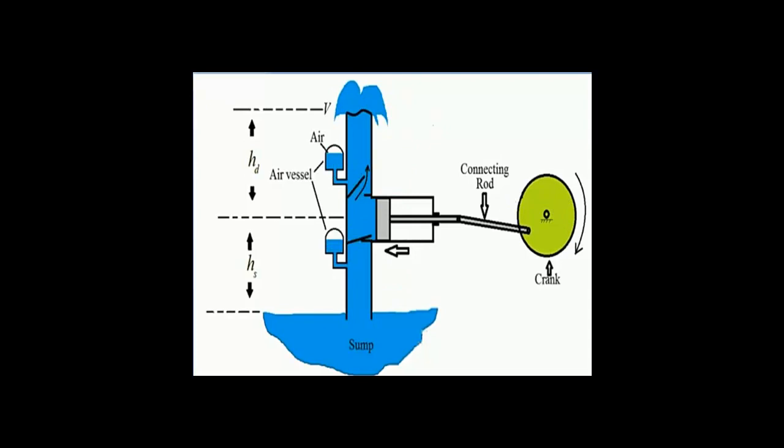Again, when the delivery stroke takes place, pressure is high in the delivery pipe, so water enters the air vessel and compresses the air inside it. When the suction valve is closed, water is also lifted into the suction-side air vessel.